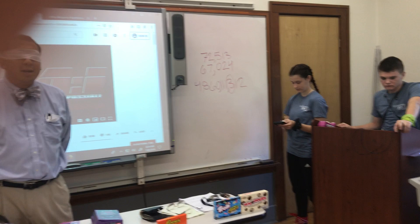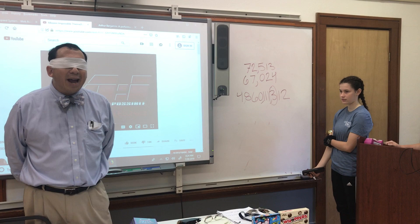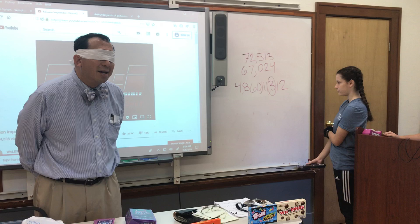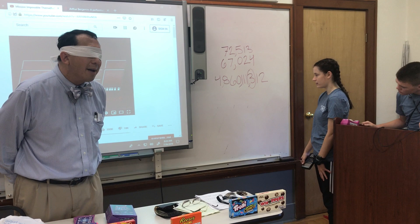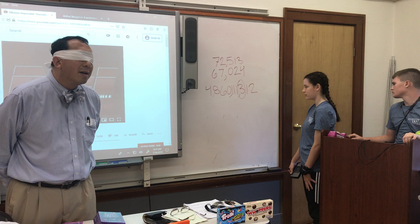Now, read me off the answer from left to right or right to left — don't tell me which — and say blank for the missing digit. Four, eight, six, zero, one, one, one, blank, one, two.